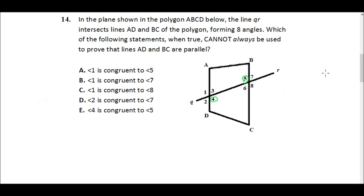In the plane shown in the polygon ABCD below, the line QR intersects lines AD and BC of the polygon, forming eight angles. Which of the following statements, when true, cannot always be used to prove that lines AD and BC are parallel?